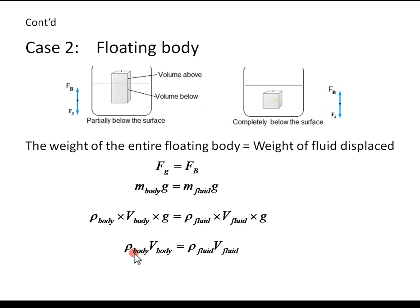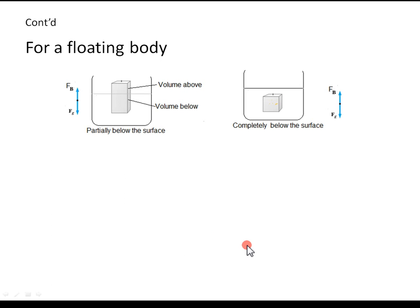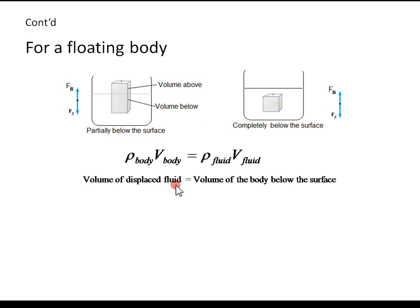Cancelling g, we get: density of the body times volume of the body equals density of the fluid times volume of the fluid. The volume of displaced fluid in this case is the volume of the body below the surface. In this particular case, it is the submerged part of the volume that displaces the fluid. Therefore, the volume of the displaced fluid equals the volume of the body below the surface.